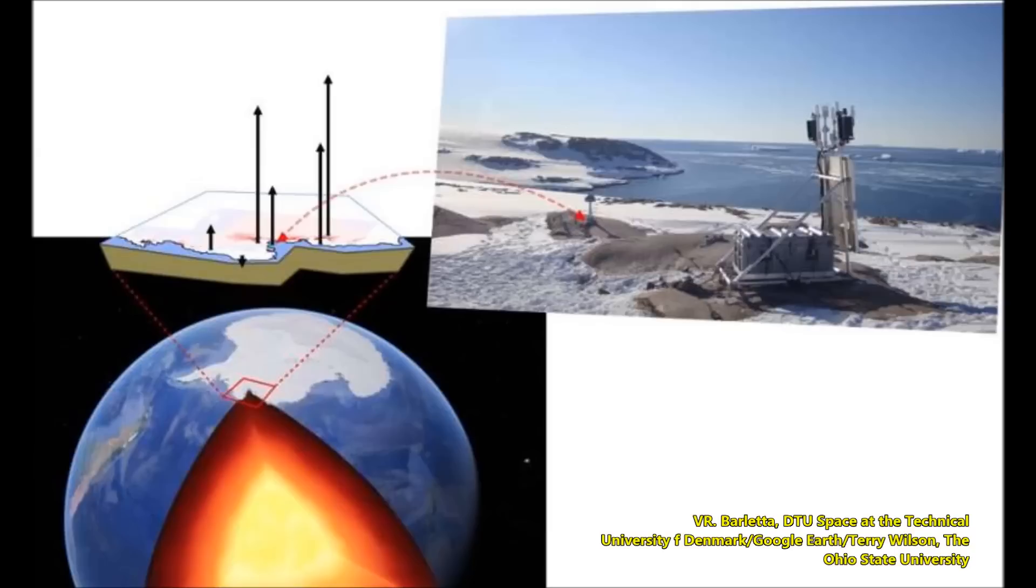The earth is rising in one part of Antarctica at one of the fastest rates ever recorded, and that means something is going on beneath the surface. It's rising at the fastest rates ever recorded as ice rapidly disappears there and weight is lifted off the bedrock.